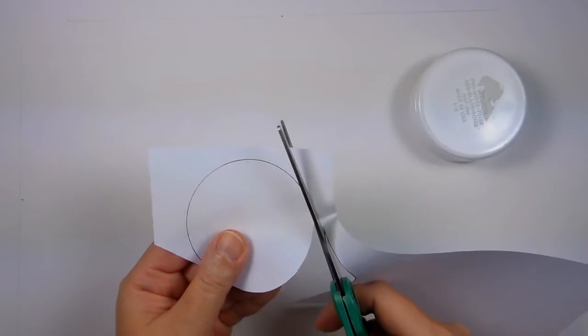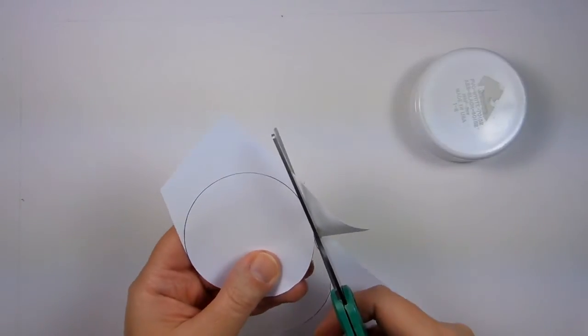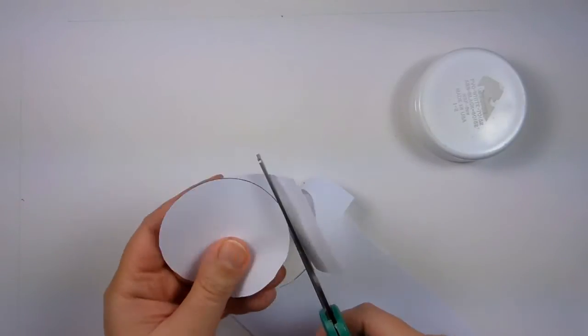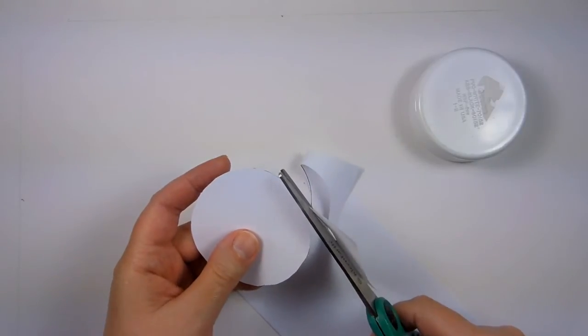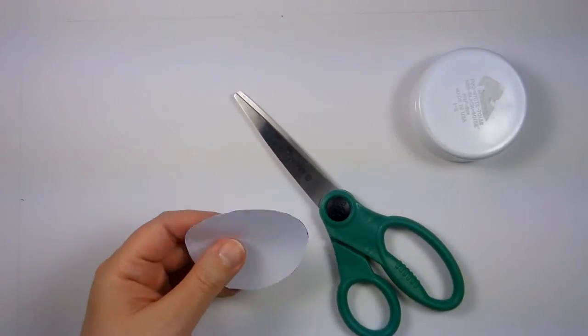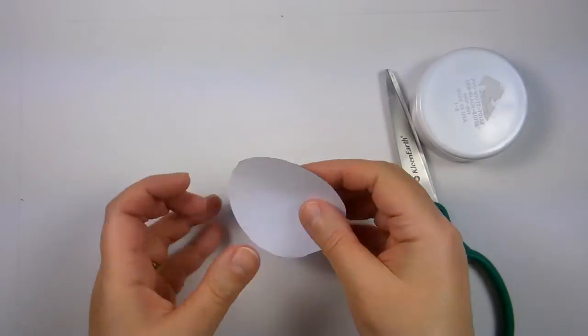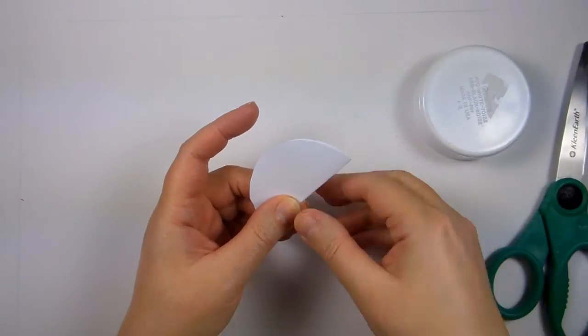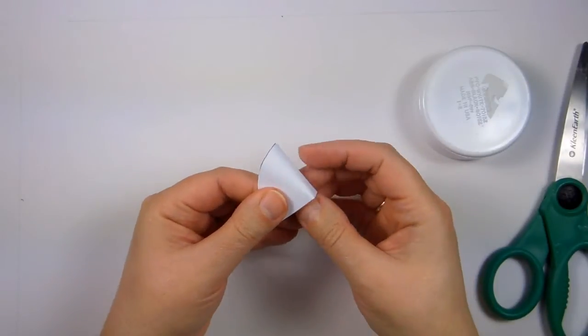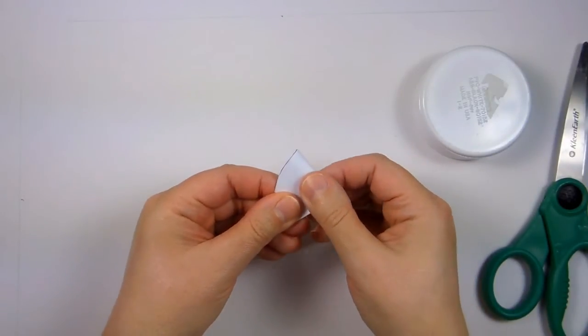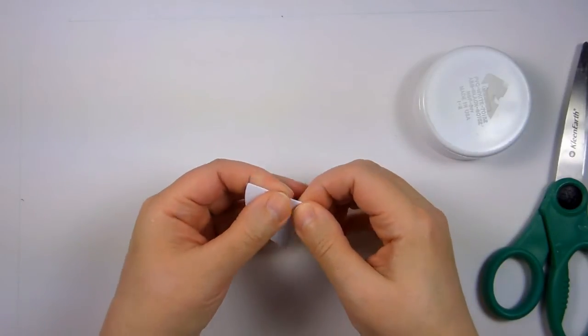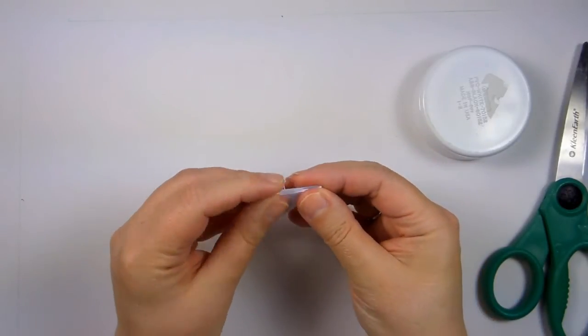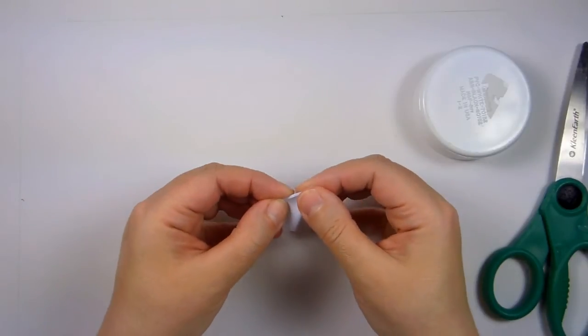And then what you're going to do with this circle is you're going to fold it in half. Then you're going to fold it in half again, so that you have it in quarters. And then you're going to fold this in half one more time, because you're going to want to put 8 arms on your drying rack.